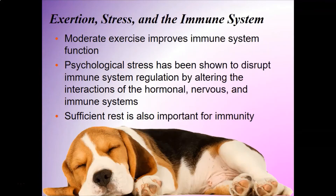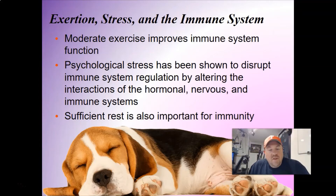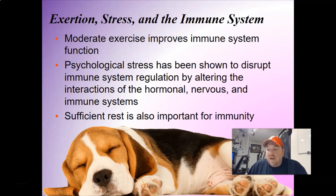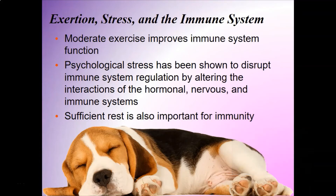How do we keep our immune system nice and healthy? Moderate exercise improves immune system function, so being active every day is very important. Stress is also very bad for your body - psychological stress can actually inhibit how well your immune system works, and this has been shown to disrupt immune system regulation by altering the interactions of the hormonal, nervous, and immune systems. Sufficient rest is also important for immunity; you have to make sure you get plenty of sleep as your body needs rest.